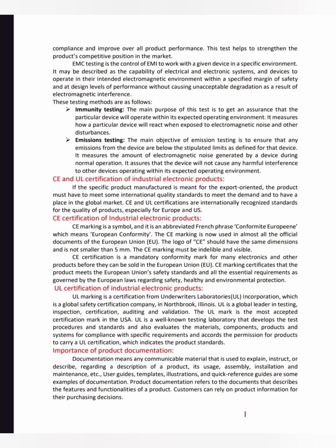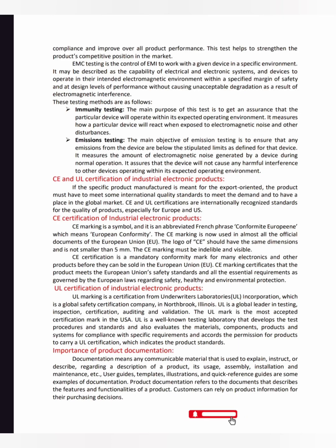Product documentation is a communicable material used to explain, instruct, and describe a product — including its usage, assembling, installation, and maintenance. Examples of documentation include user guides, templates, illustrations, and quick references.